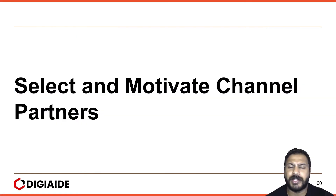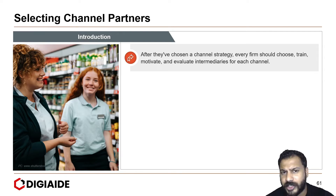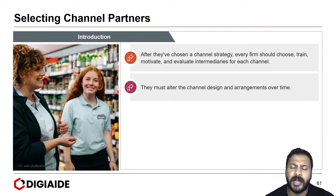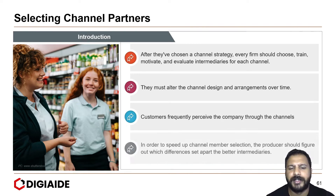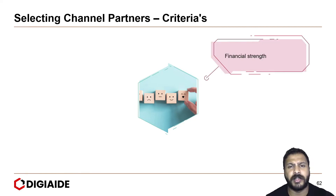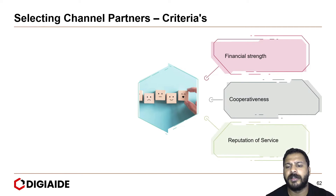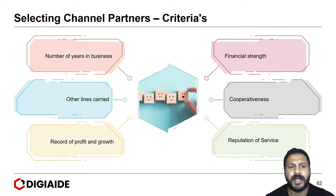Moving on to the selection and motivation of channel partners. After they have chosen a channel strategy, every firm should choose, train, motivate, and evaluate intermediaries for each channel. They must alter the channel design and arrangements over time. Customers frequently perceive the company through the channels. In order to speed up channel member selection, the producer should figure out what differences set apart the better intermediaries. There are certain criteria such as the financial strength of the channel partner, cooperativeness, reputation of service provided, record of profit and growth, other lines carried, and number of years in business.